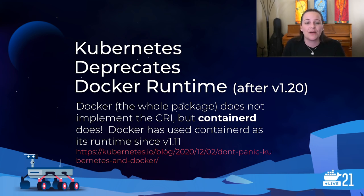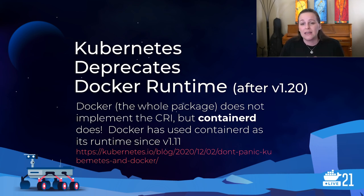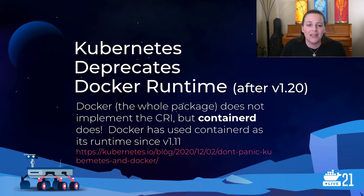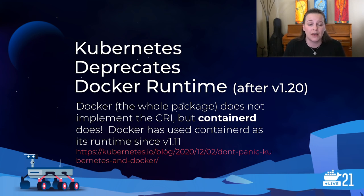Kubernetes announced they are deprecating the Docker runtime after version 1.20. This is nothing to panic about — in short, the deprecation of the Docker runtime support does not in any way, shape, or form mean that Docker is going anywhere or losing support in other ways. You can still use Docker to develop and produce Docker images and containers as you do now. Those images and containers are runnable by Kubernetes. It's just that Kubernetes no longer wants to do the work of supporting the entire tech stack — they want to support those that implement the CRI. Note that Containerd does implement the CRI, and Docker has used Containerd as its runtime since version 1.11.